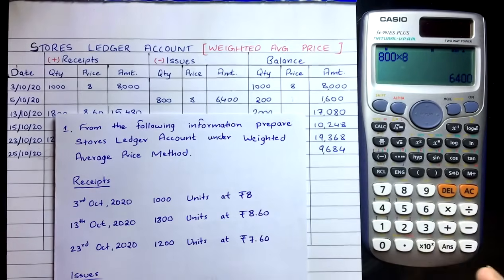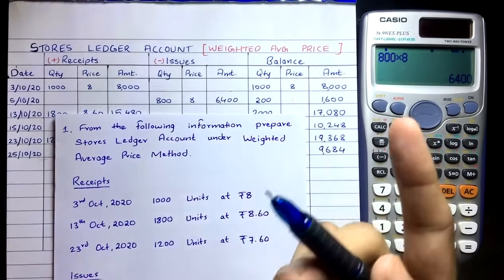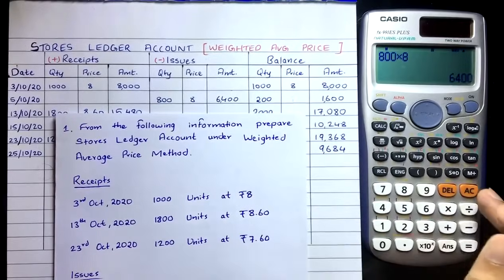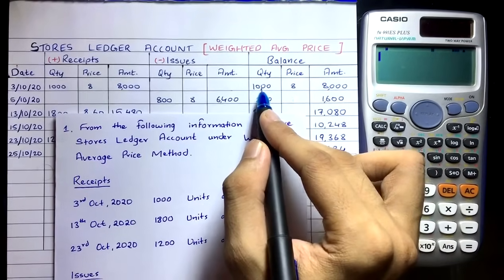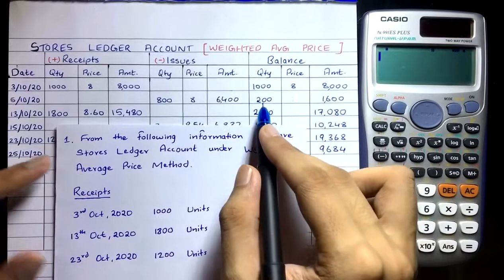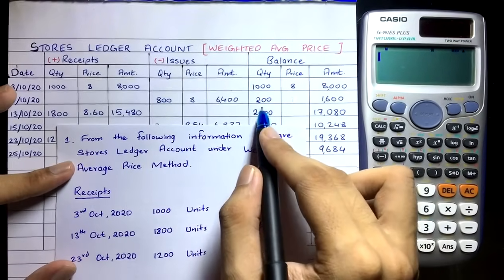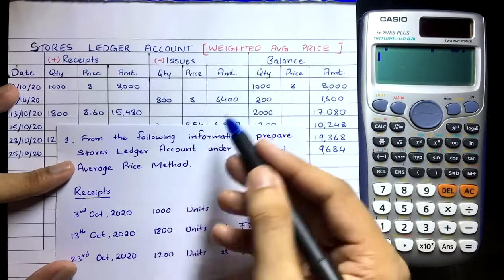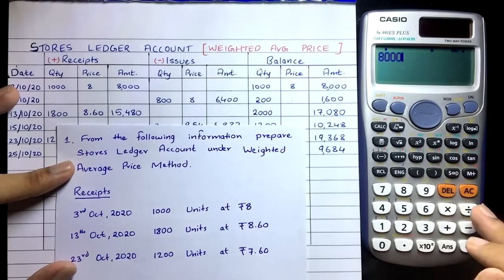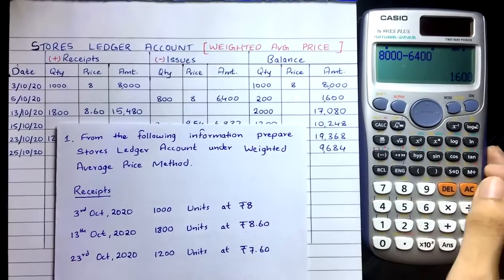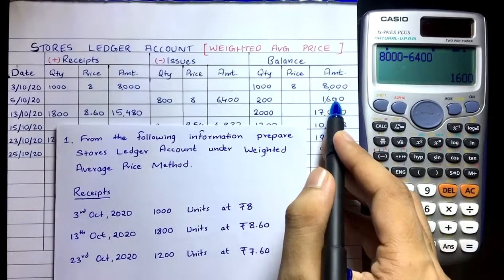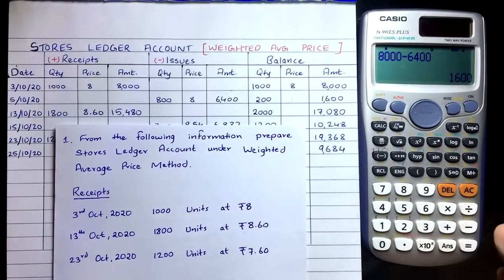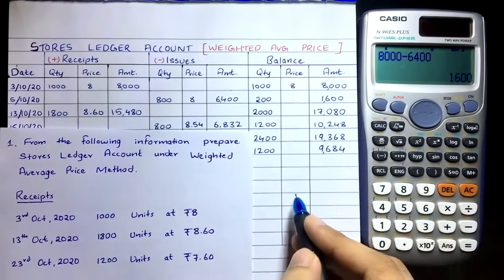To update the balance column after the issue: subtract. We had 1,000 quantity — sent out 800 — leaving 200 quantity. Cost was ₹8,000 minus ₹6,400 = ₹1,600. So the new balance is 200 quantity costing ₹1,600. In the balance column, prices are left empty as they are irrelevant in this method.